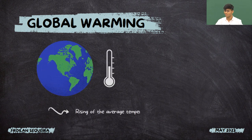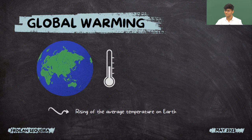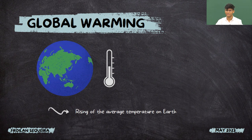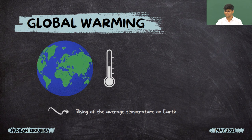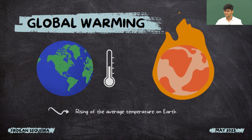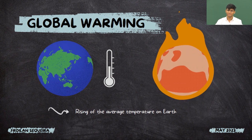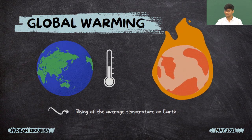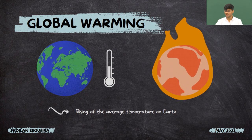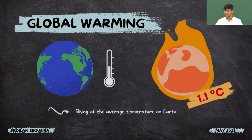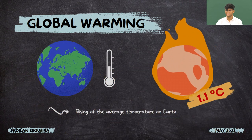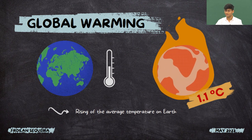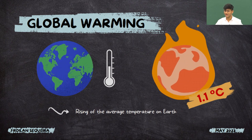Global warming is the term used to describe the rising average temperatures of our planet Earth. In other words, it's the process of our planet completely heating up. In the last century, the Earth has warmed up by an average of 1.1 degrees Celsius, which might not sound like a lot, but it will have a big impact.